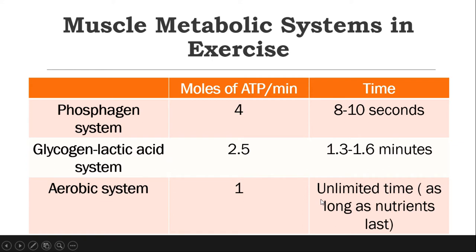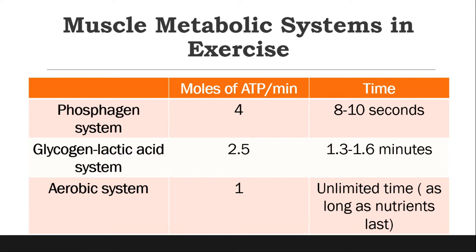Most probably, during a marathon the body uses the aerobic system since it can be used for unlimited time as long as stores remain. The aerobic system uses fatty acids, amino acids, and glucose to supply the body — unlike the phosphagen system which only uses phosphocreatine/creatine phosphate, and the glycogen-lactic acid system which only uses glycogen. In the aerobic system, when glucose is depleted it uses fatty acids, then after fats are depleted it uses amino acids. Those are the three muscle metabolic systems in exercise.